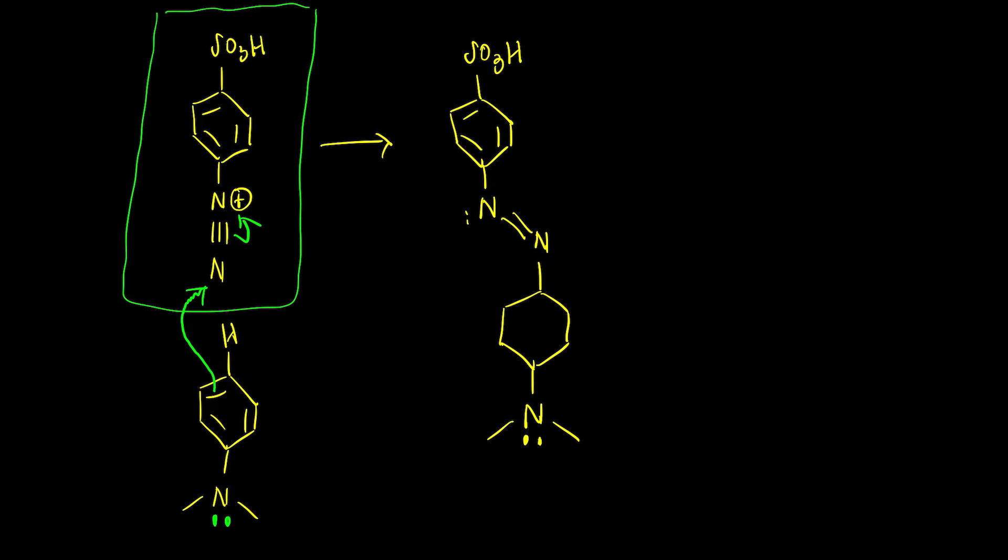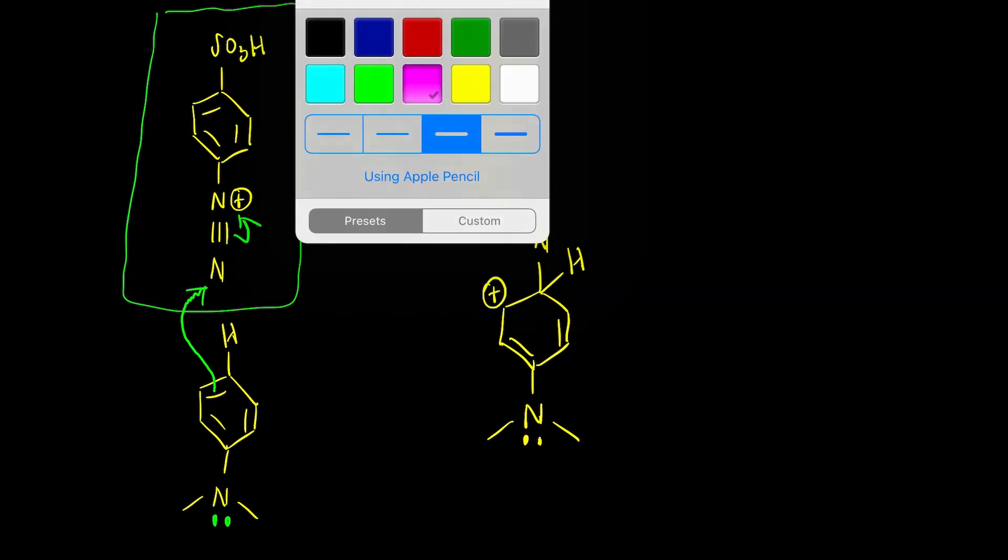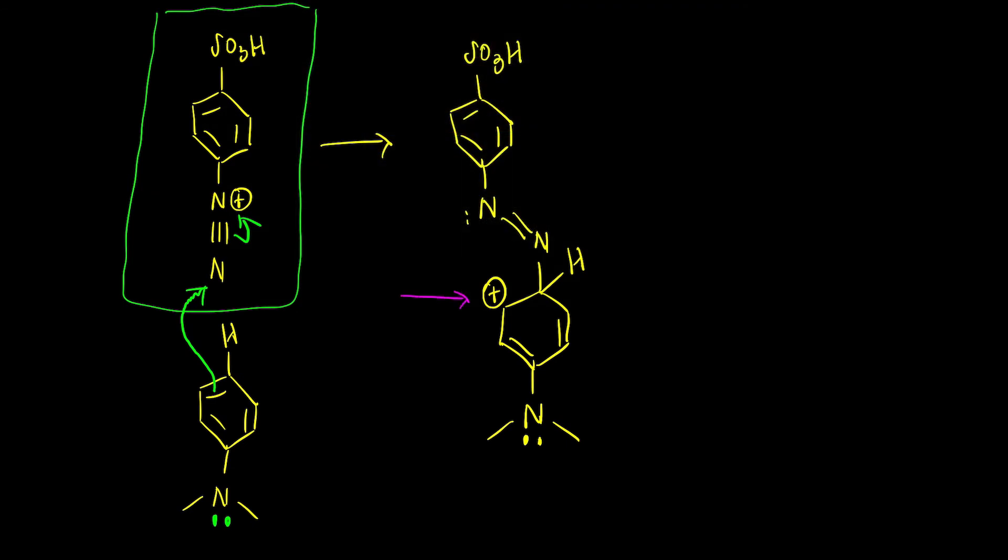It takes a while to draw all these in. We'll leave those pi bonds the same. I'll highlight my hydrogen here and put the positive charge here. Some students get confused where to put the positive charge. You're going to place it on the carbon that has three groups, not this carbon because you have four groups attached to it.